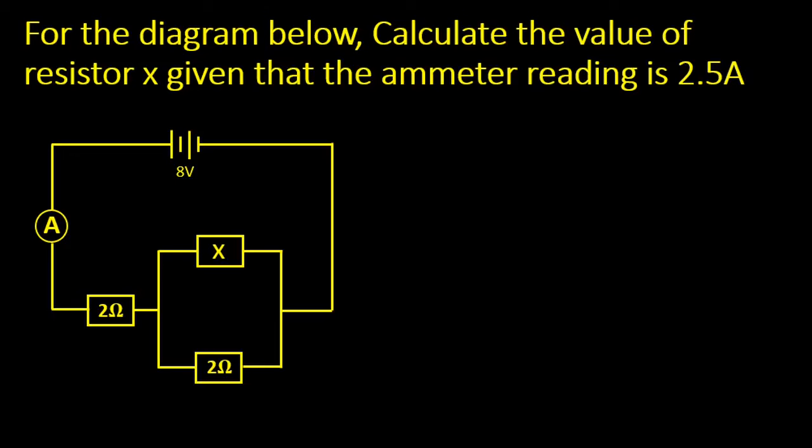If you look at this circuit connection, we can see that it involves both series connection and parallel connection. This resistor here which is reading x, let's call it resistor one. This one here, let's call it two. This one here, let's call it three.